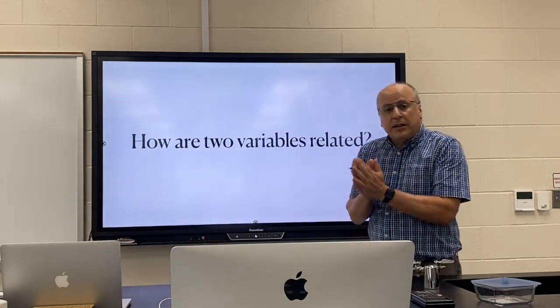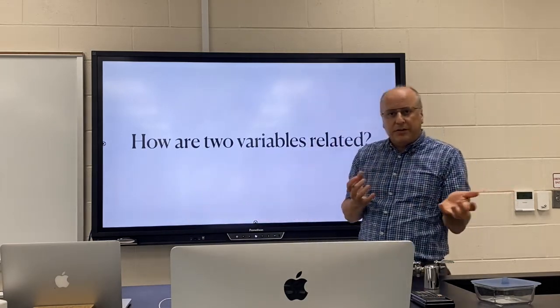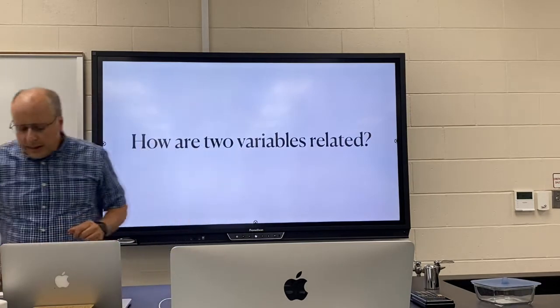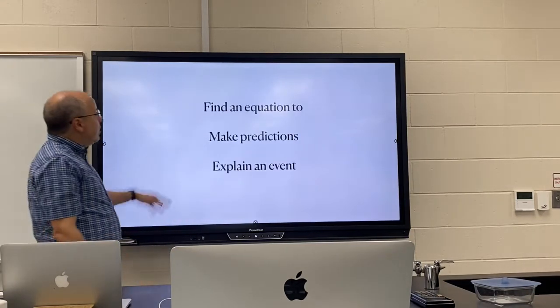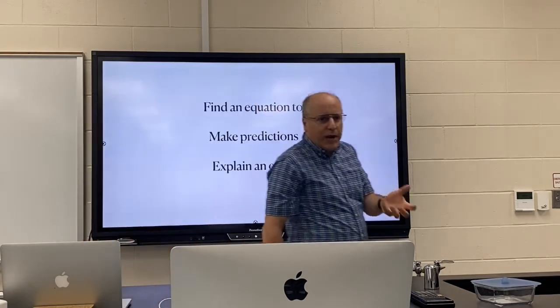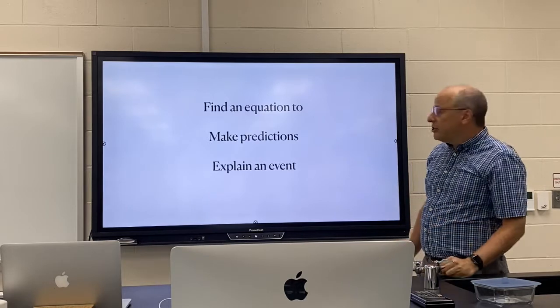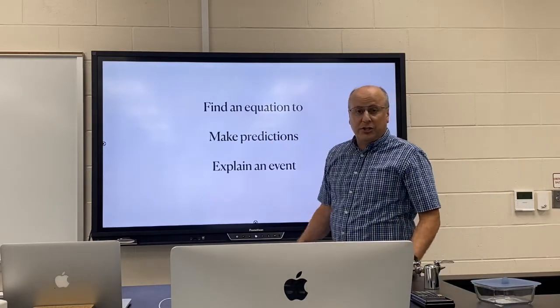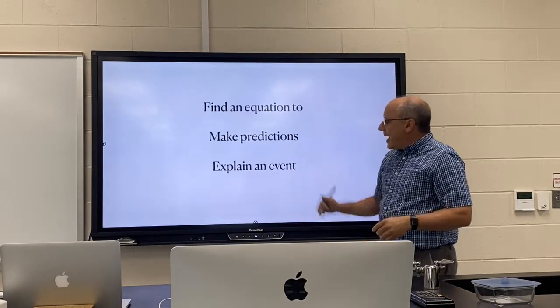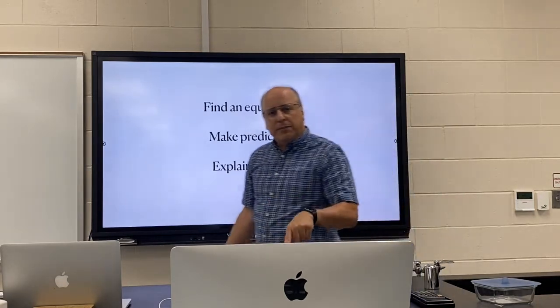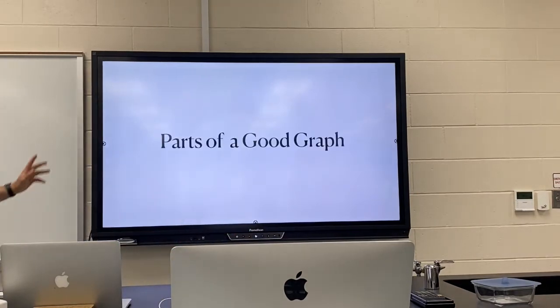When you conduct an experiment, the whole point of the experiment is to see how one thing affects another. So that's what the graph will allow us to do. Why do we do that? To create an equation. The whole point of a graph is to create an equation. Why do we want an equation? So we can make predictions—predictions about things that haven't happened yet, or to work backwards and explain why something that's already happened happened.